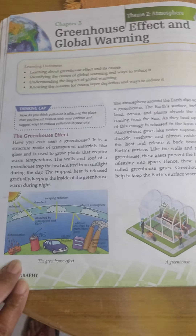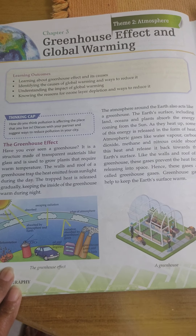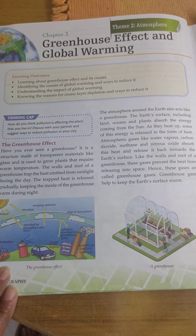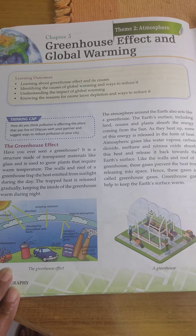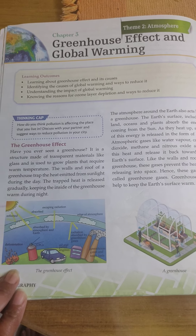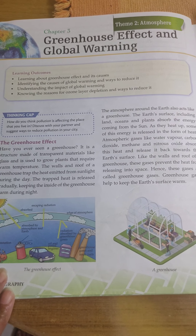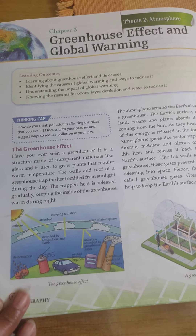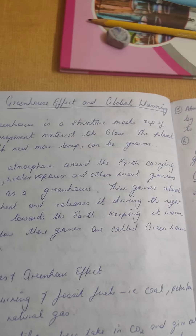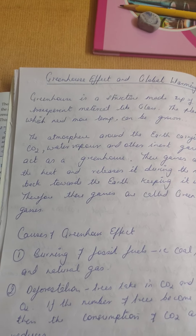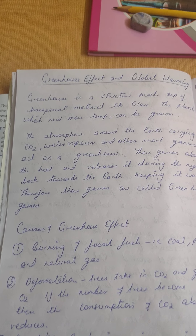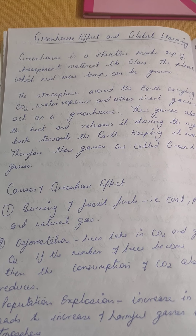Good morning students. As I mentioned during the zoom class, we'll be starting with chapter number three: greenhouse effect and global warming. A greenhouse is a structure made up of transparent material like glass, which helps to store heat inside so that plants remain warm and can grow much faster.